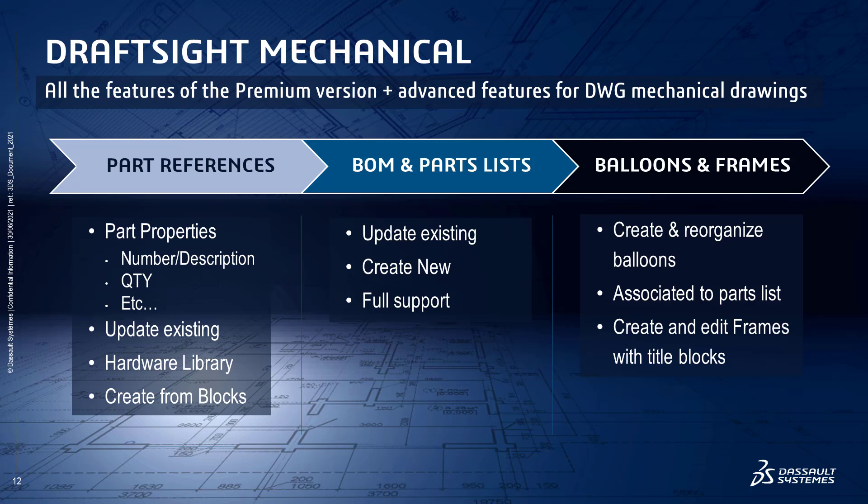There are three major areas to understanding DraftSight Mechanical. The first is part references, which add intelligence to the 2D entities so that they will be treated like a separate part for BOM tracking. Part references contain all the part information like number, description, vendor, etc. Existing ones can be modified, and new ones are automatically created when using the hardware library or user-defined custom blocks.